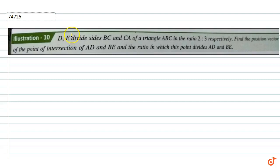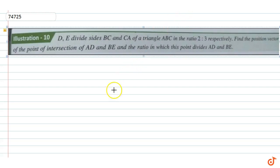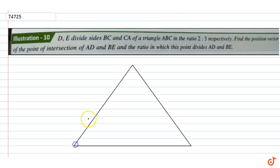D and E divide sides BC and CA of a triangle ABC in the ratio 2:3 respectively. Find the position vector of the point of intersection of AD and BE, and the ratio in which the point divides AD and BE. So this is point A, this is point B, and this is point C.